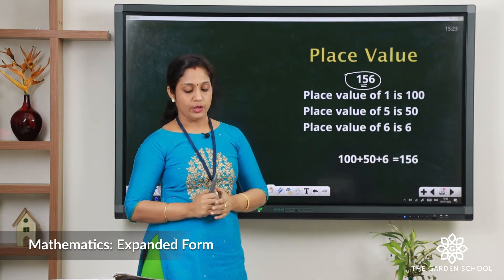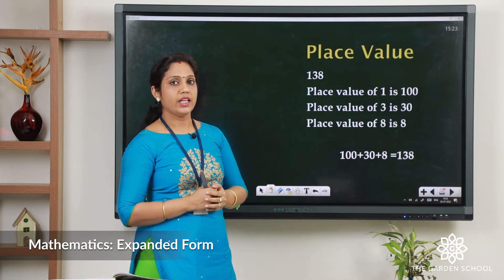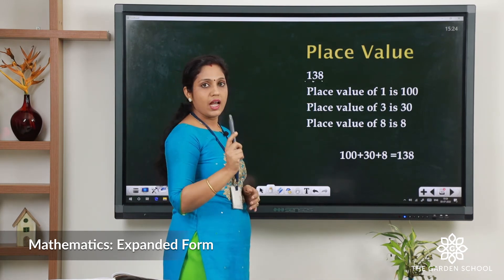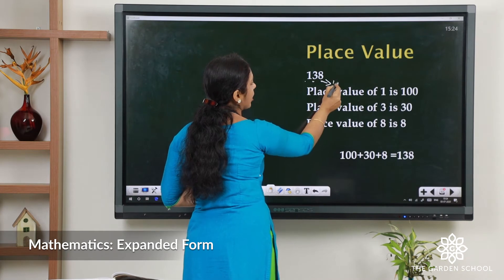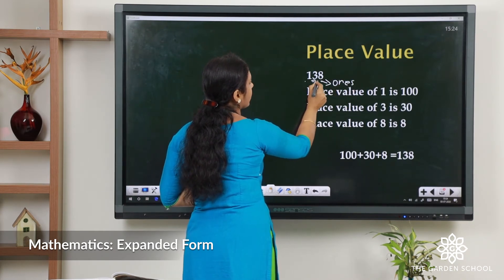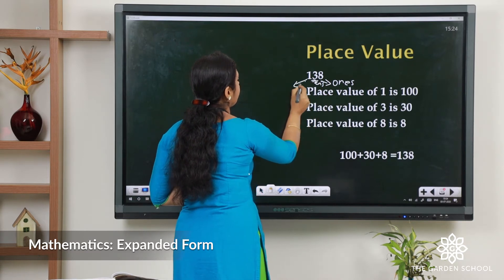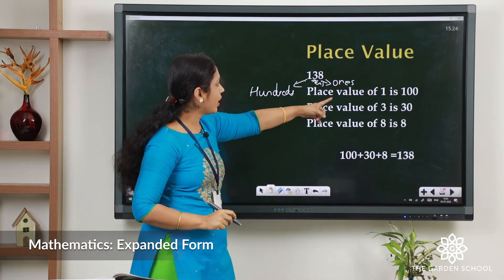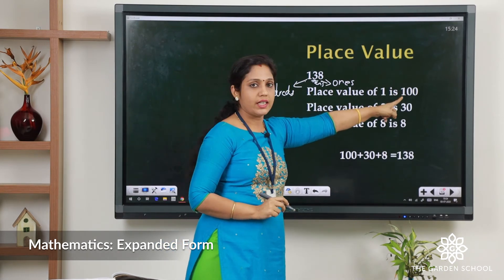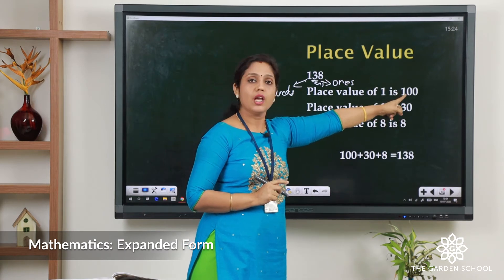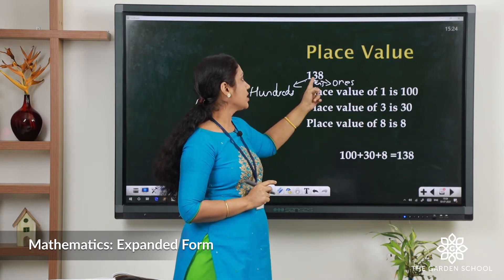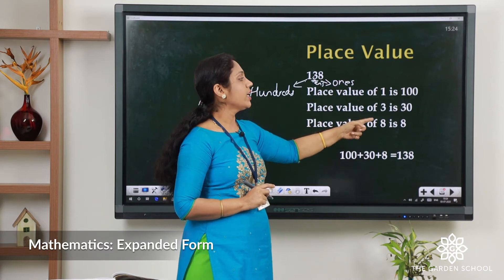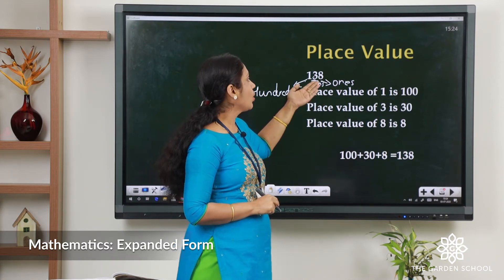This is how we check the place value of 138. 8 is in the ones position, 3 is in the tens position, 1 is in the hundreds position. Always check from the right side: ones, tens, hundreds. The place value of 1 is 100 — there is only one hundred in that place. Place value of 3: it comes in the tens place, so 3 tens make 30. Place value of 8 is 8. So the number is 138.